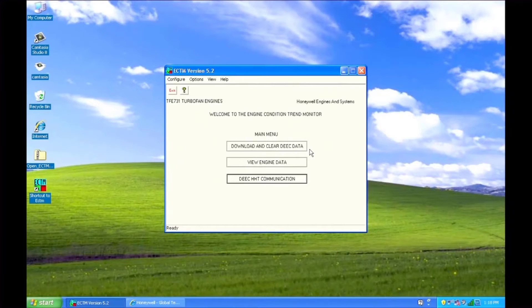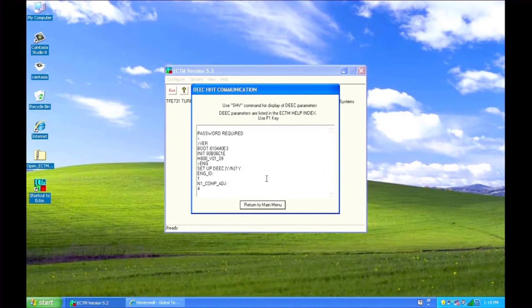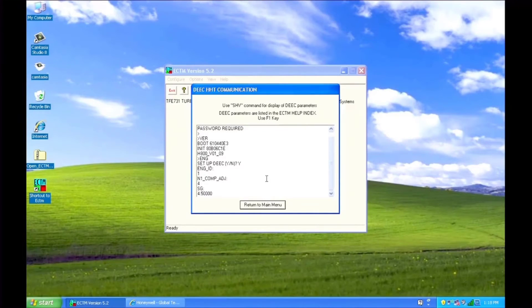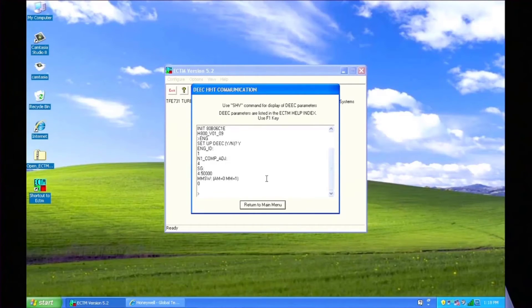Start ECTM and go to HHT Communication. Enter ENG. You'll be asked if you want to set up the DEEC. Enter Y for Yes. Enter your engine ID code, compensation value, and specific gravity. Refer to the worksheet you filled out for this information. Make sure the MMSW setting is set to 0 for Auto Mode. Push Enter and return to the main menu. Cycle power to the DEEC and return to the screen and verify that the values entered are correct. Entering an incorrect engine ID or N1 compensator value may result in an incorrect installed thrust setting.